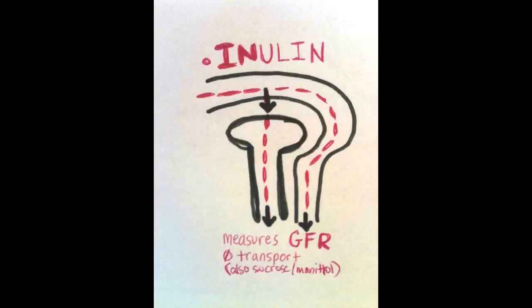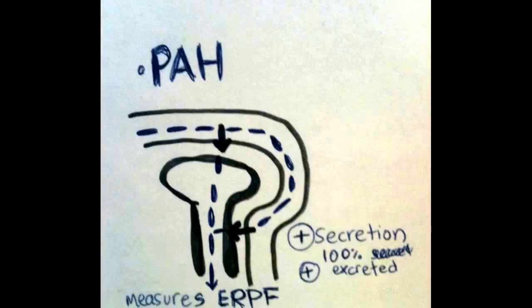Now we have PAH. This substance is filtered, and whatever goes into the peritubular capillaries is completely secreted back into the tubule. 100% of PAH is excreted in the urine. For this reason, PAH is a good way to determine effective renal plasma flow, which is the amount of fluid entering the kidneys.